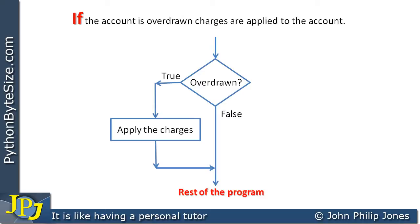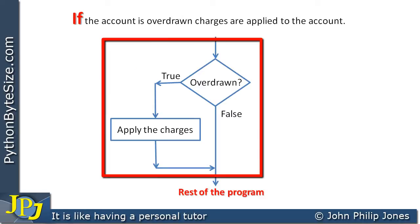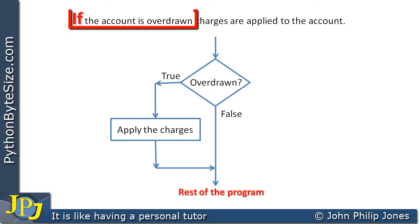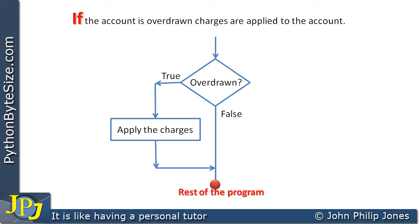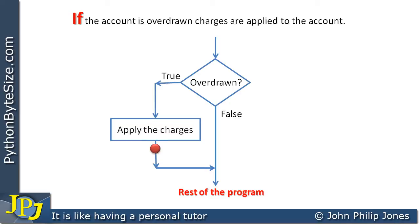The previous video in this playlist looked at the selection structure — the if selection structure. If the account is overdrawn, charges are applied to the account. One dot represents the flow through the program if the customer is not overdrawn at the end of the day; however, they could be overdrawn, in which case charges are applied and the flow continues with the rest of the program. If you didn't follow that, make sure you look at the previous video in this playlist.